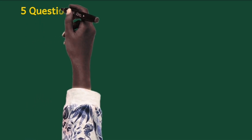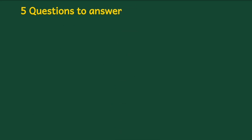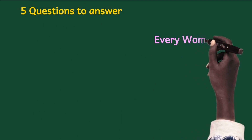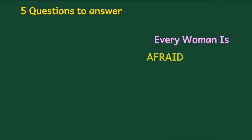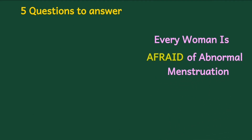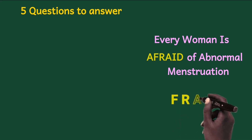To determine whether the menstruation is normal or abnormal, we need to answer 5 questions. These 5 questions can be remembered using the mnemonic AFRAID — paying attention to only the last 5 letters of the word: F, R, A, I, D.